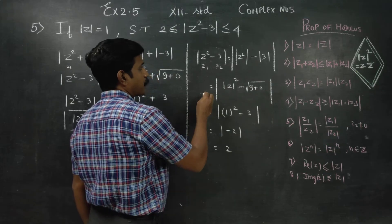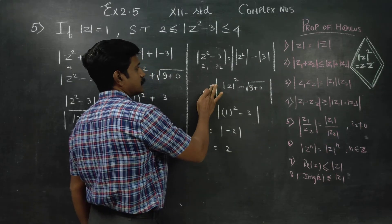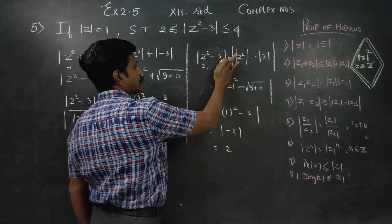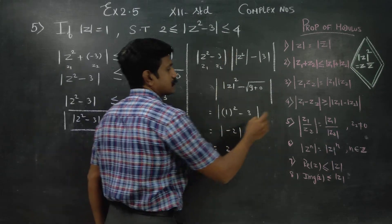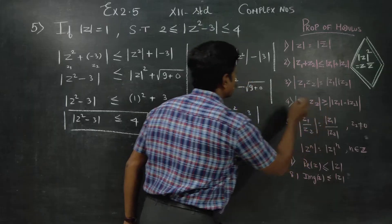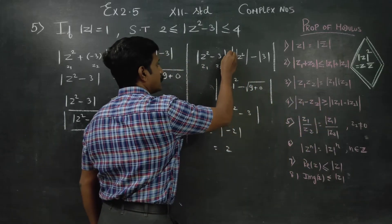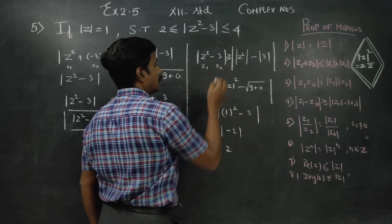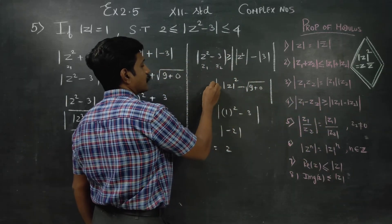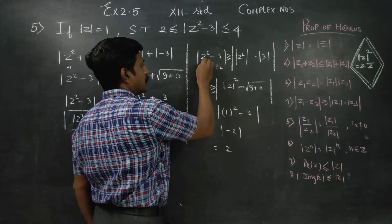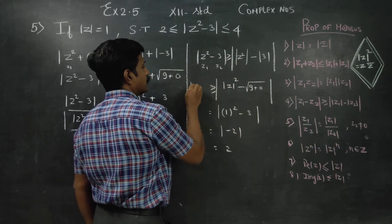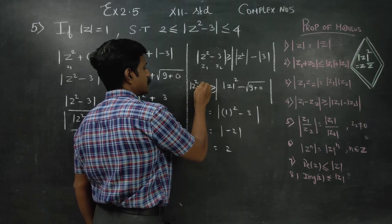This symbol is equal to. Actually, we can use greater than or equal to. So |z² - 3| is greater than or equal to 2.